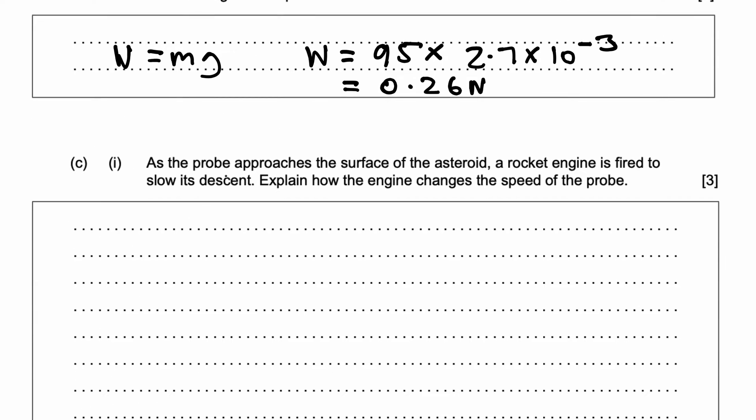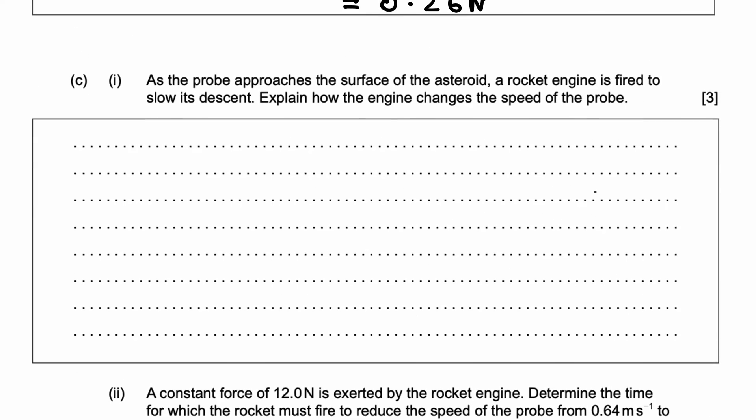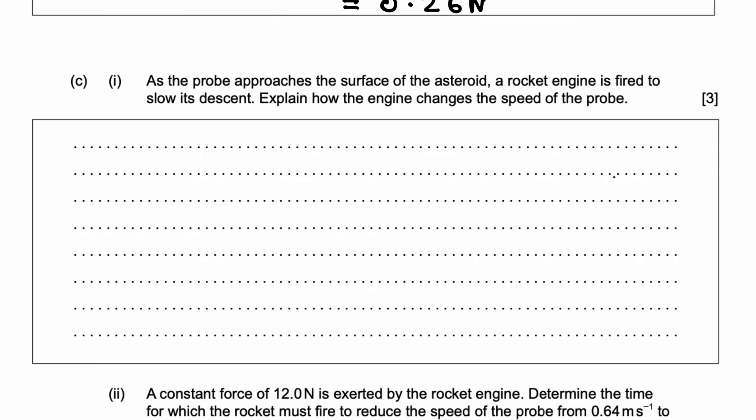Part C, C1. As the space probe approaches the surface of the asteroid, a rocket engine is fired to slow its descent. Explain how the engine changes the speed of the probe. What do we do here? Well, we need to understand the function of this rocket engine.